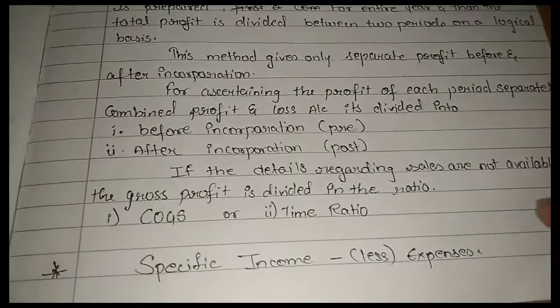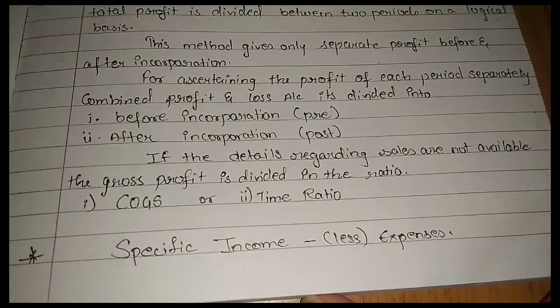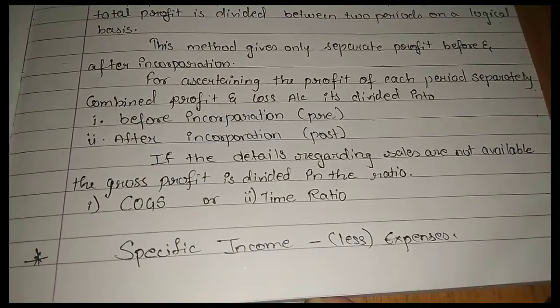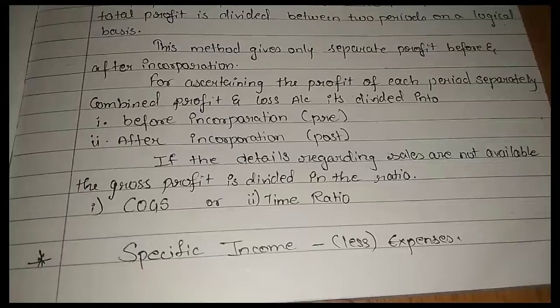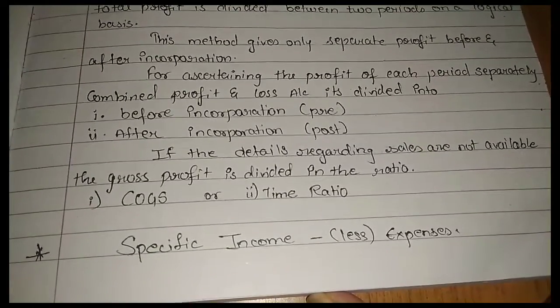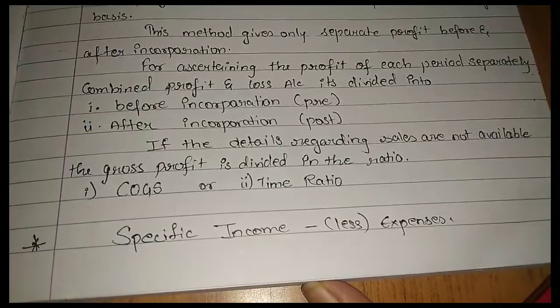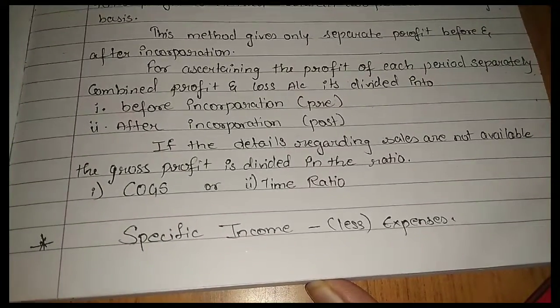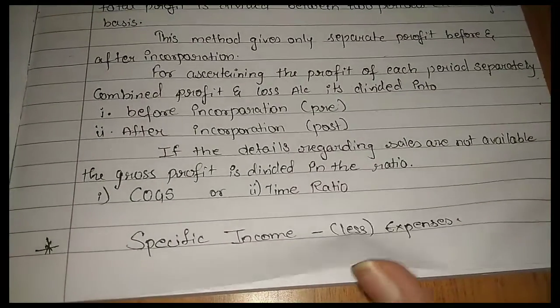For ascertaining the profit of each period separately, combined profit and loss account is divided into pre-incorporation and post-incorporation. If the details regarding sales are not available, then gross profit is divided in the COGS and time ratio.